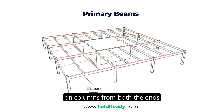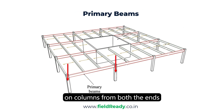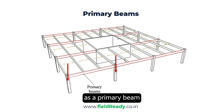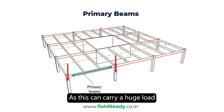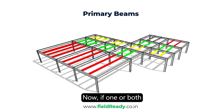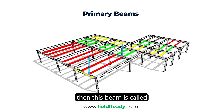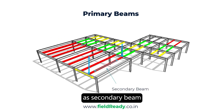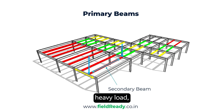If a beam is supported on columns from both ends, then this beam will act as a primary beam, as it can carry a huge load and can transfer the loads directly to the columns. Now, if one or both ends of a beam lies on a primary beam, then this beam is called a secondary beam. These beams usually do not carry heavy loads, so the steel requirement will also be less.